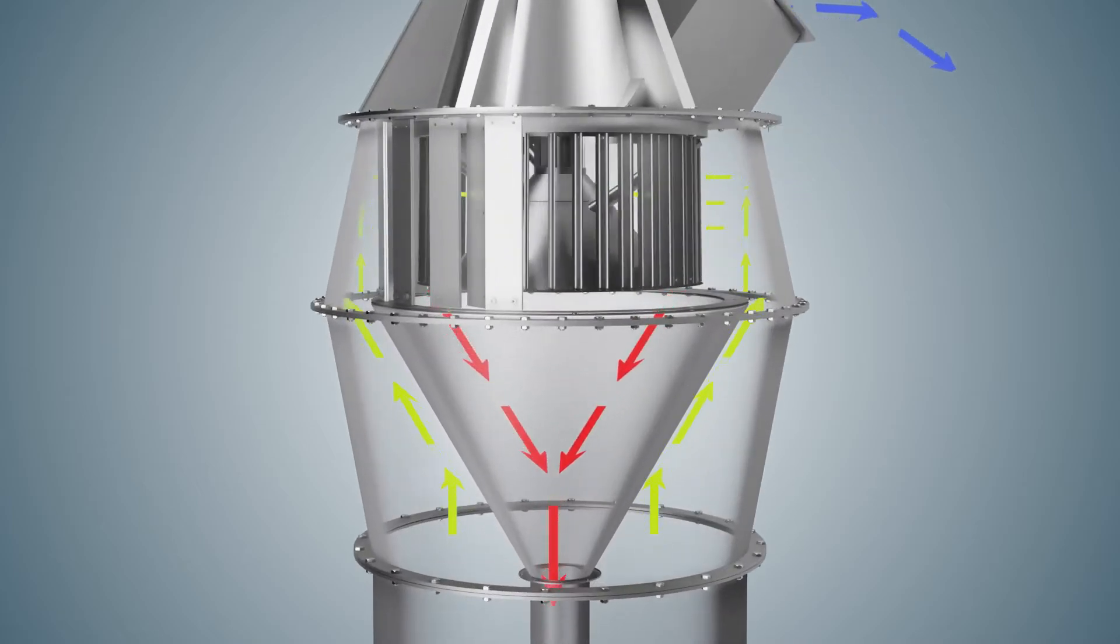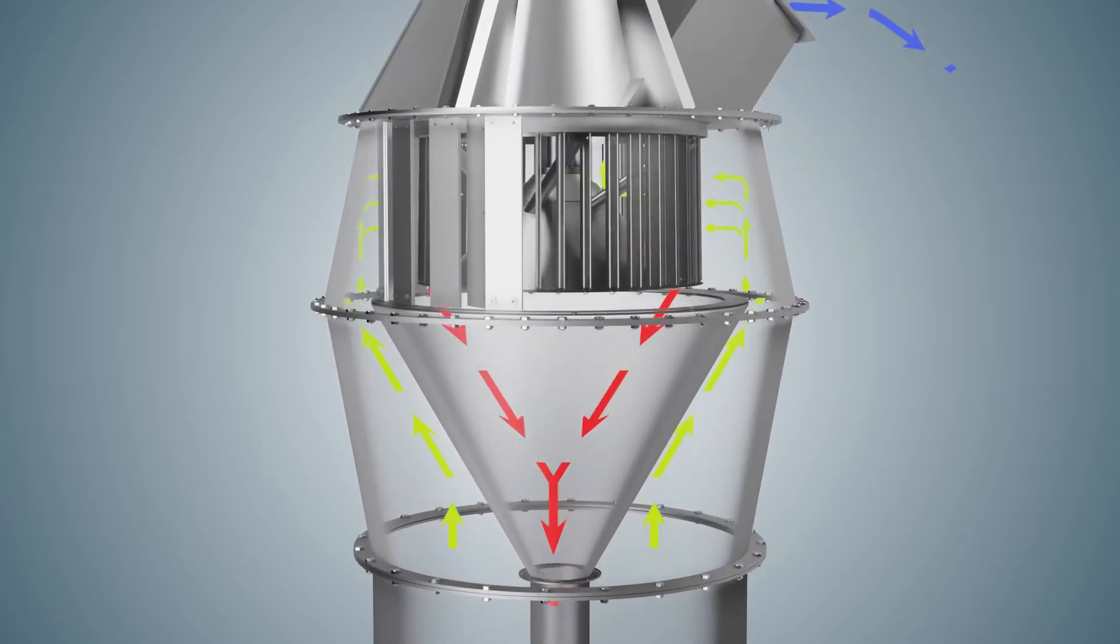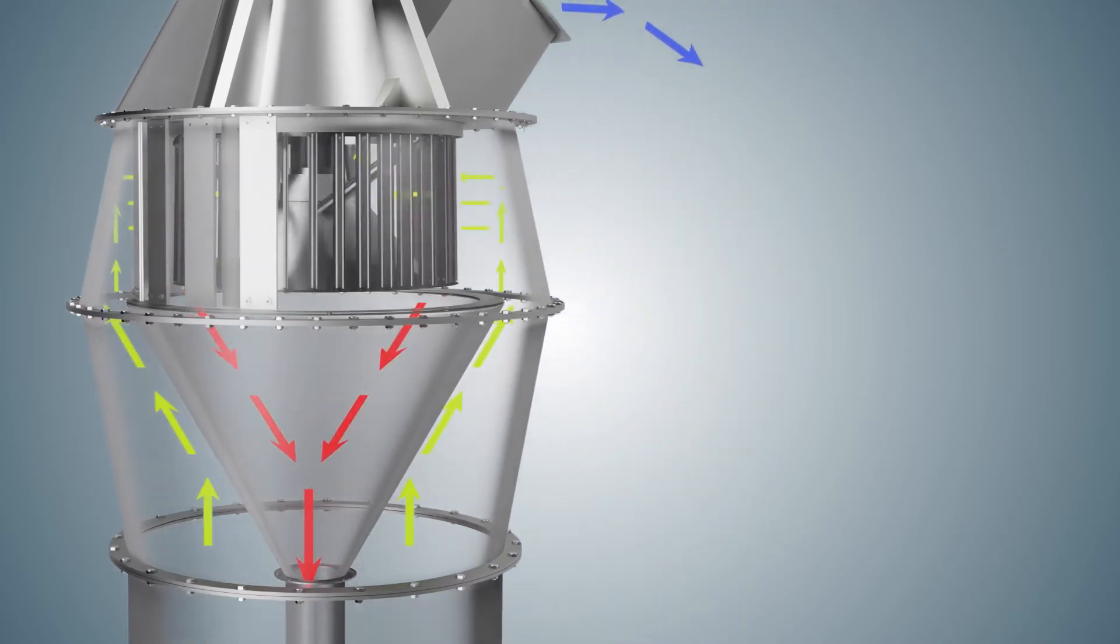Rejected material is directed down through a grit funnel back to the grinding chamber without passing through turbulent air material currents.